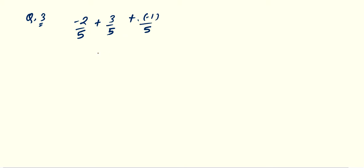So, the first thing which you have to observe is denominator - denominators are equal or different. In this question, denominators are 5, 5 and 5, that means they are same.